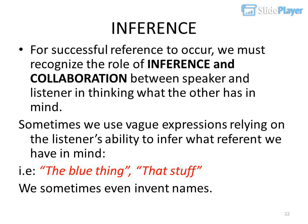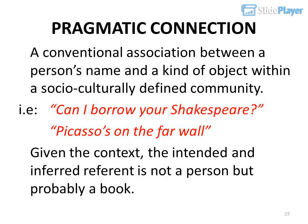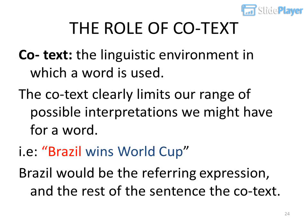We sometimes even invent names. Pragmatic connection: a conventional association between a person's name and a kind of object within a socio-culturally defined community — for example: 'Can I borrow your Shakespeare?' or 'Picasso's on the firewall.' Given the context, the intended and inferred referent is not a person but probably a book. The co-text — the linguistic environment in which a word is used — clearly limits our range of possible interpretations.